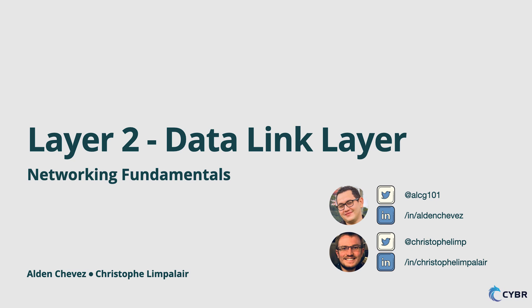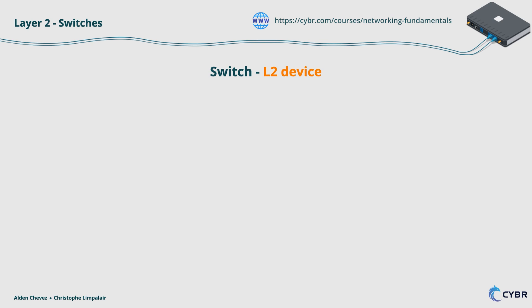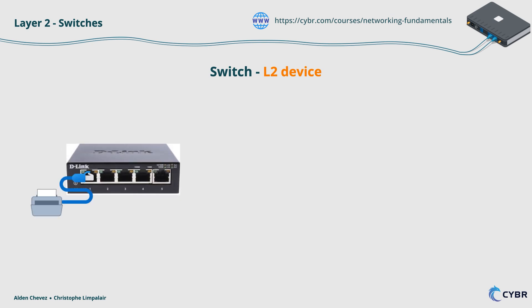As part of Layer 2 devices, or L2 devices, we have something called a switch. Switches have a primary purpose of connecting devices in your network together, and they're different from routers. Most households don't have standalone switches since they'll typically use WiFi from routers to connect to the internet. But since switches are L2 devices, they use the MAC address to send and receive packets.